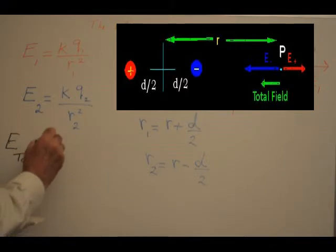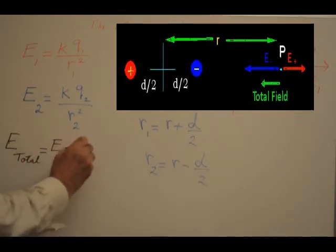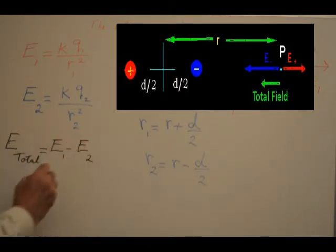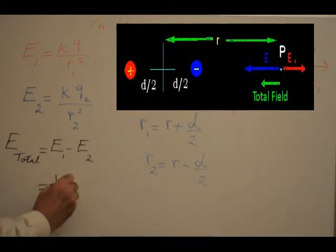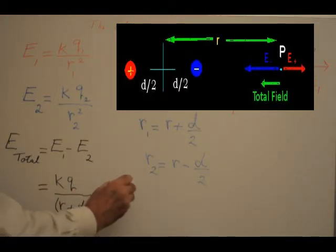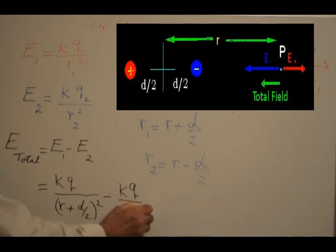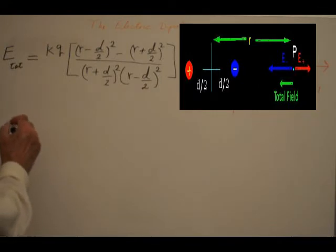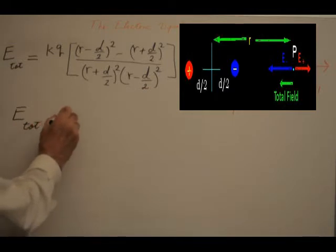The total electric field E is equal to E1 minus E2. Substituting for E1 and E2 in terms of distance r we get, and simplifying this expression by finding the common denominator and opening the brackets in the numerator.